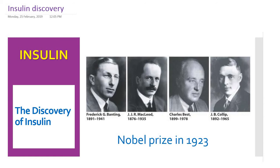A Canadian physician Banting and medical student Charles Best were able to extract insulin from the dog pancreas during 1921. Later, during 1922, along with Canadian chemist Collip and Scottish physiologist McLeod, all these four people were able to extract and purify insulin and treat a boy suffering from severe diabetes mellitus. For this Nobel work, they were awarded the Nobel Prize in 1923.